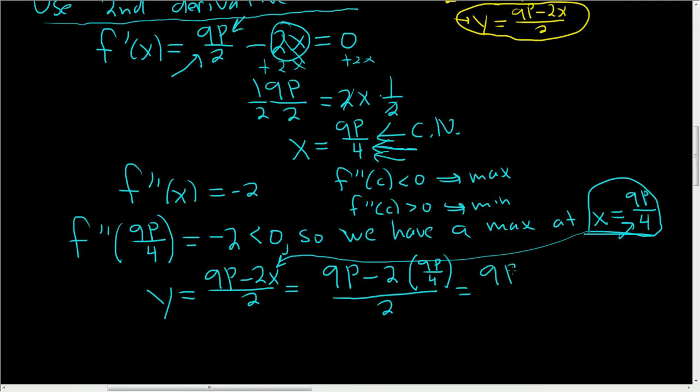So we get 9p minus, and then the 2's cancel. 2 cancels with the 4, so you get minus 9p over 2, over 2. So there's really a 1 here. So you have 1 times 9p, and you're subtracting half of 9p, so you have half of 9p left.